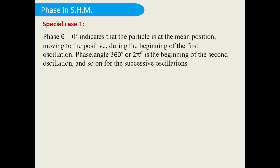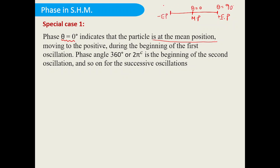Let us look at some special cases of phase. If phase θ = 0°, it indicates the particle is at the mean position. At the positive extreme position, θ = 90°. For the negative extreme position, θ = 270°.